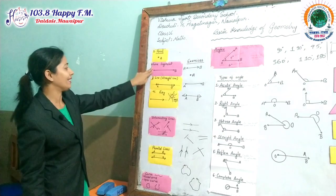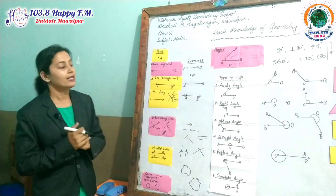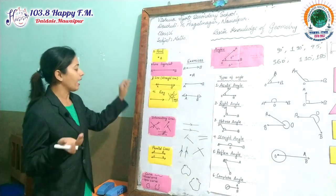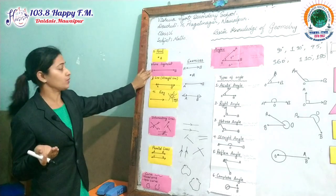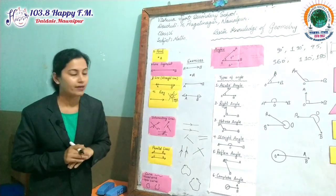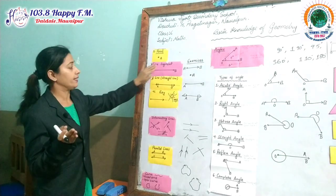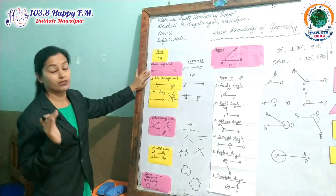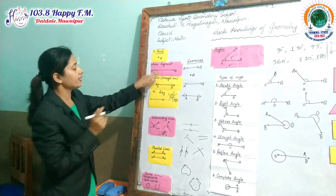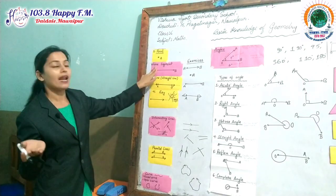The next topic is line segment. We are going to discuss three types of lines: line segment, line or straight line, and ray. Line segment means the line where the origin and end points are fixed — there is a definite start and end. It may be 5 cm or 6 cm. It is fixed. That's why it is called a line segment.